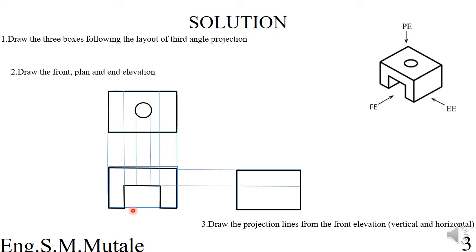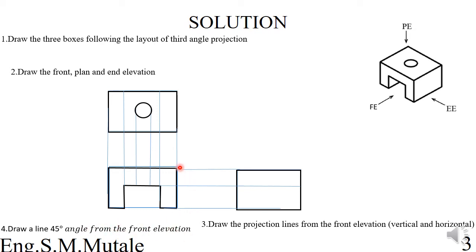Step four is to draw a 45-degree angle line from the corner of the front elevation. From this point we draw a 45-degree line — this should be exactly 45 degrees.